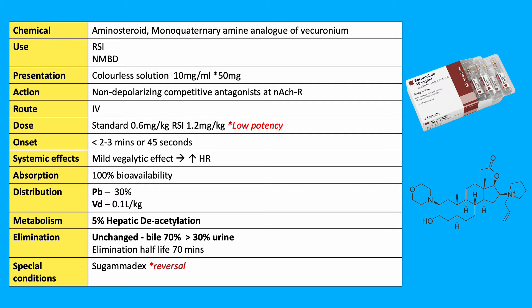It is a non-depolarising competitive antagonist at the nicotinic acetylcholine receptor. The standard dose for adults is 0.6mg per kg and 1.2mg per kg for RSI doses, due to the lower potency of the agent.